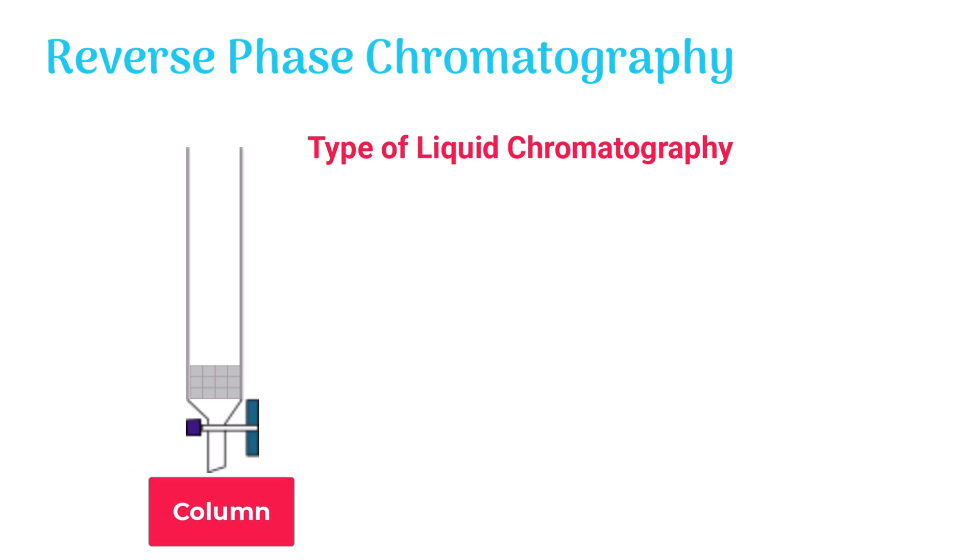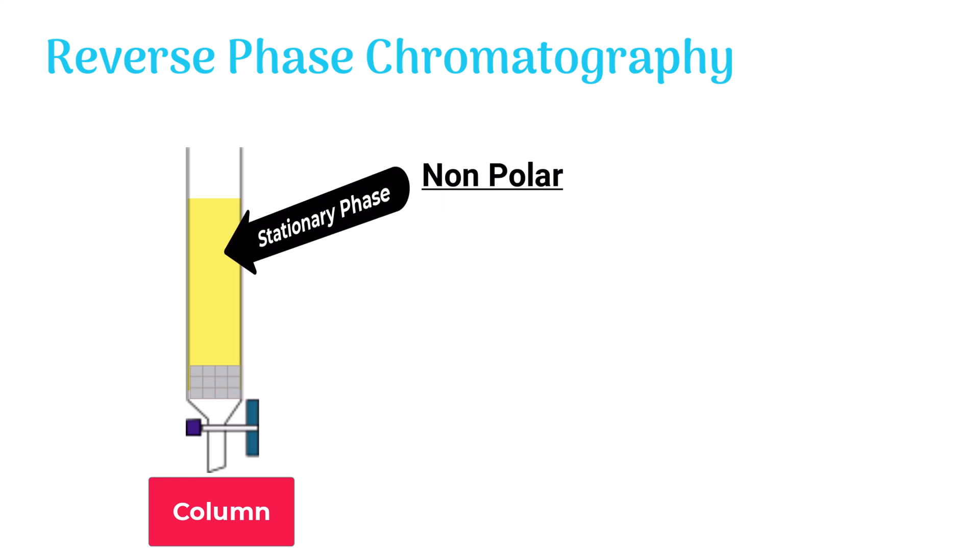Reverse phase chromatography is a type of liquid chromatography which is carried out in a column. In this type of chromatography, the stationary phase is non-polar, which means it repels water and other polar molecules.